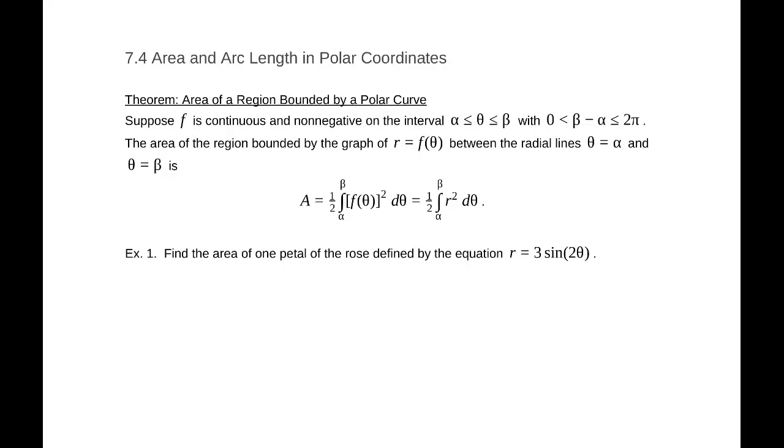Section 7.4: Area and Arc Length in Polar Coordinates. To begin with, we have this theorem, the area of a region bounded by a polar curve. Suppose f is a continuous and non-negative function on the interval from alpha to beta in terms of theta, with 0 < beta minus alpha ≤ 2π. The area of the region bounded by the graph r = f(θ) between the radial lines θ = α and θ = β is given by this formula.